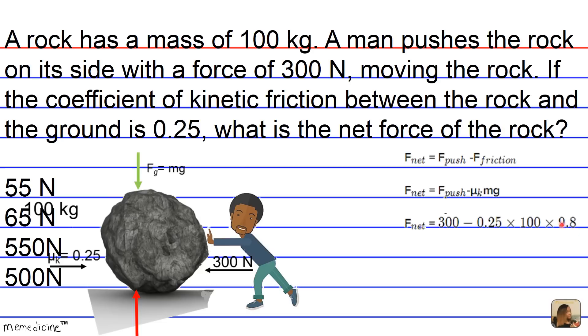When we multiply that out we get 25 times 9.8, which gives us 300 minus 245 newtons. Therefore our overall net force is 55 newtons and the correct answer choice is A.